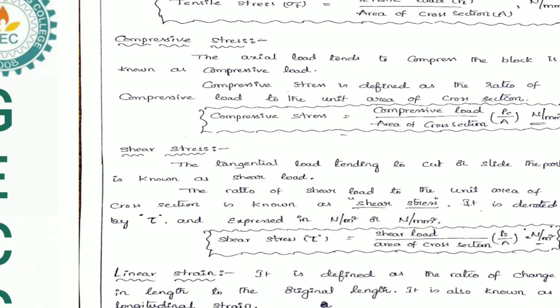Now, third one: what is shear stress? The tangential load tending to cut or slide the part is known as shear load. The ratio of shear load to the unit of cross section is known as shear stress. It is denoted by tau and expressed in Newton per mm² or Newton per m². Finally, shear stress tau = Ps / A Newton per mm² or Newton per m².